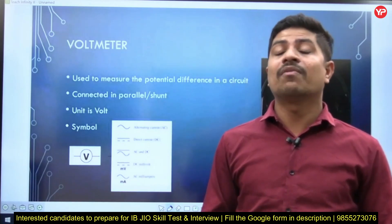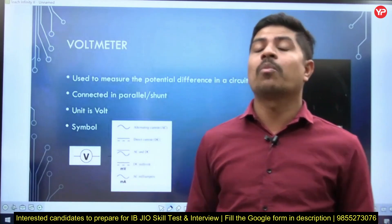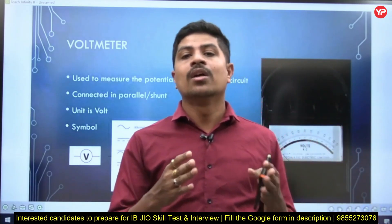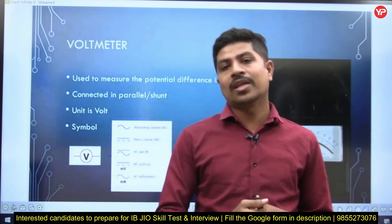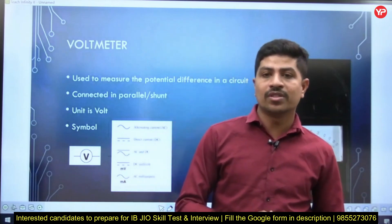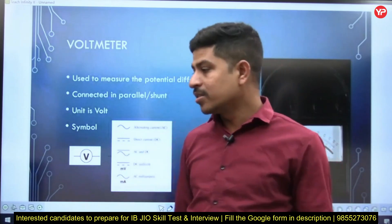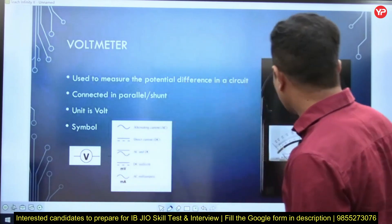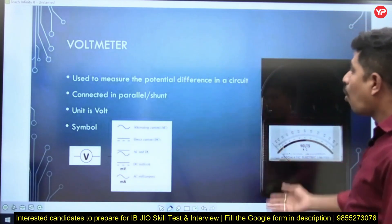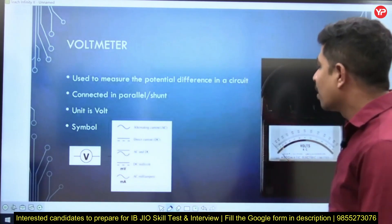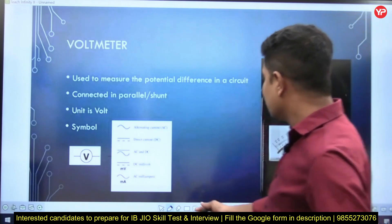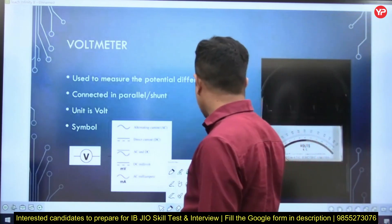Tube light connection can be asked from an electrical engineering point of view in the JIO — Junior Intelligence Officer — exam. Now, on a voltmeter, there are different symbols mentioned. Let me explain those symbols.